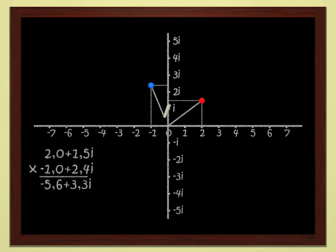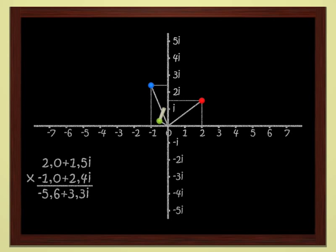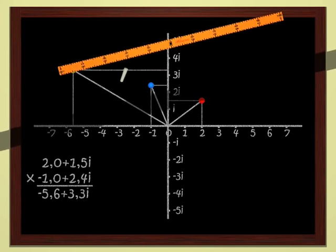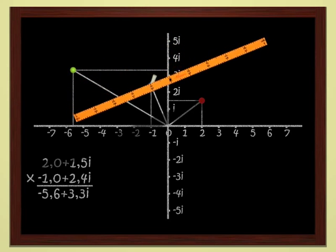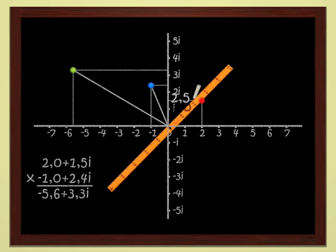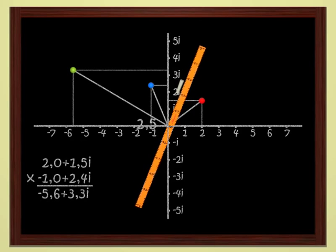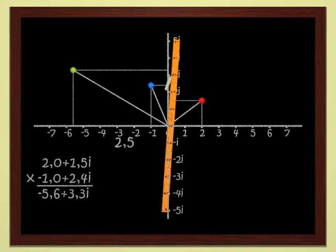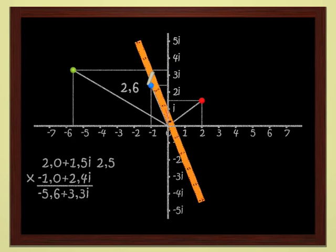It seems the right time to define two notions, the modulus and the argument of a complex number. The modulus of a complex number Z is just the distance from the origin to the point that represents Z in the plane. Let's use the ruler to determine the modulus of the red point, which is 2 plus 1.5i. Let's see. It measures 2.5. The modulus of 2 plus 1.5i is therefore 2.5.